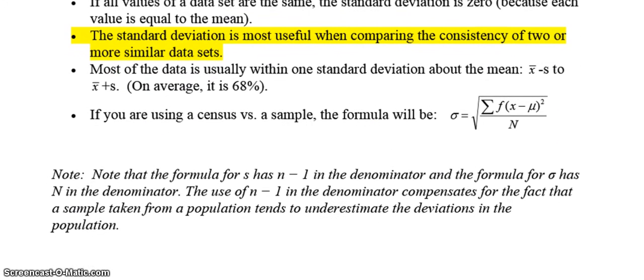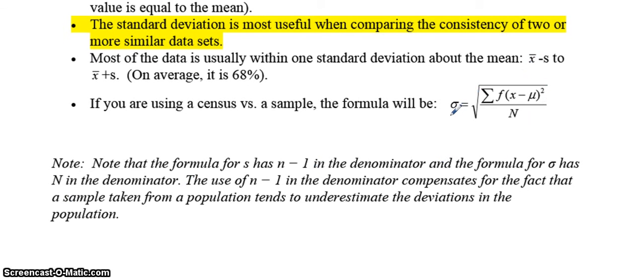So if you're using a census versus the sample, this is the way the formula works. The formula for the sample standard deviation has n minus 1 in the denominator, and the formula for the population standard deviation has capital N in the denominator. The use of n minus 1 in the denominator compensates for the fact that a sample taken from a population tends to underestimate the deviations in the population. So because samples are smaller than populations or census, they found that if you divide by n minus 1 instead of n, it was closer to the standard deviation of the population.